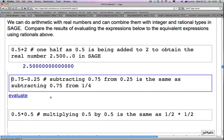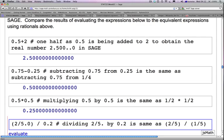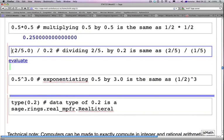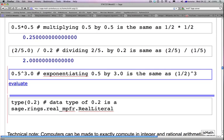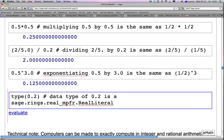So, similarly, 0.75 minus 0.25 is 0.5, 0.5 times 0.5 is 0.25, and 2.5 divided by 0.2 is simply 2. Once again, exponentiating is similar, 0.5 raised to the power of 3 is 0.125.